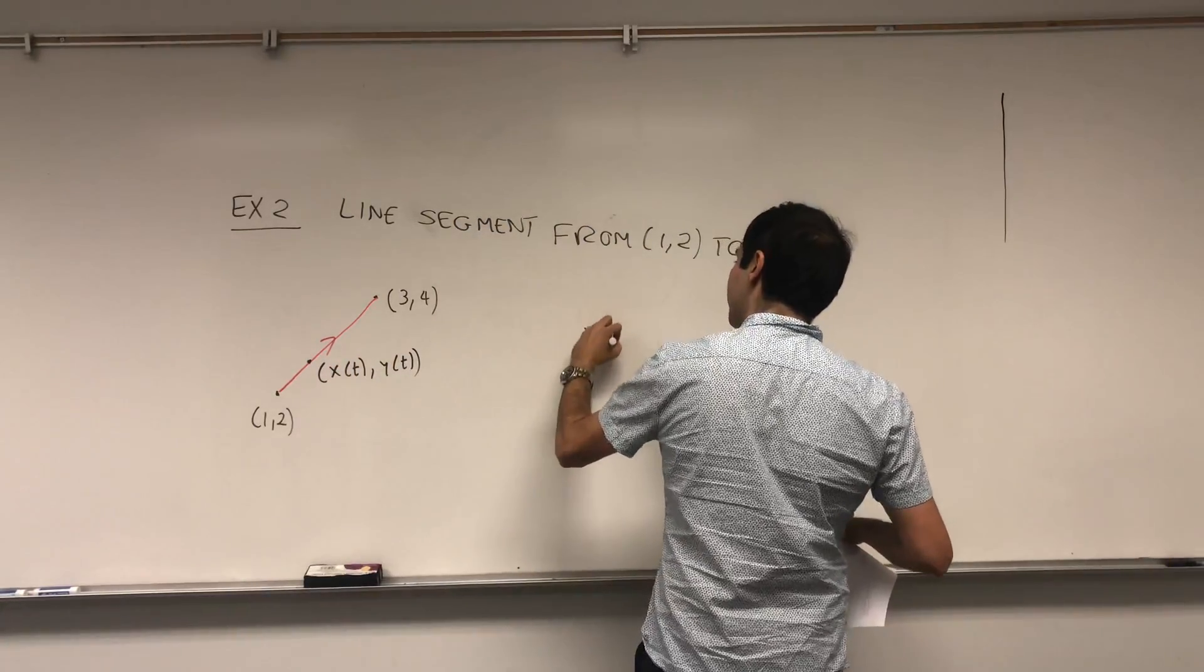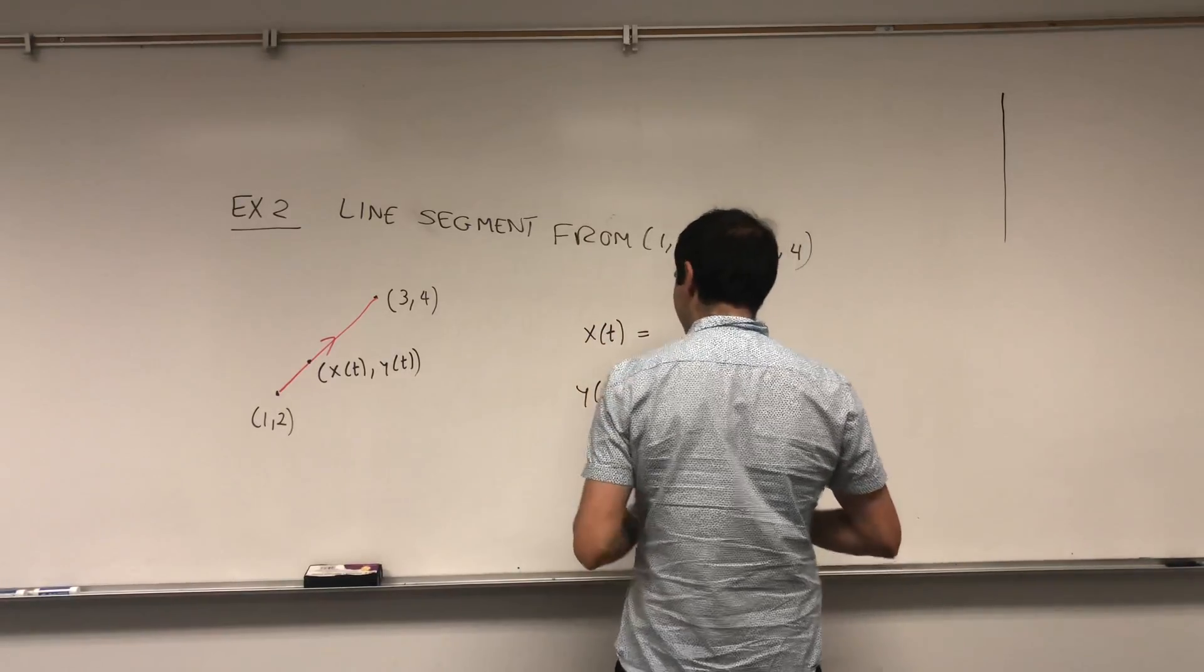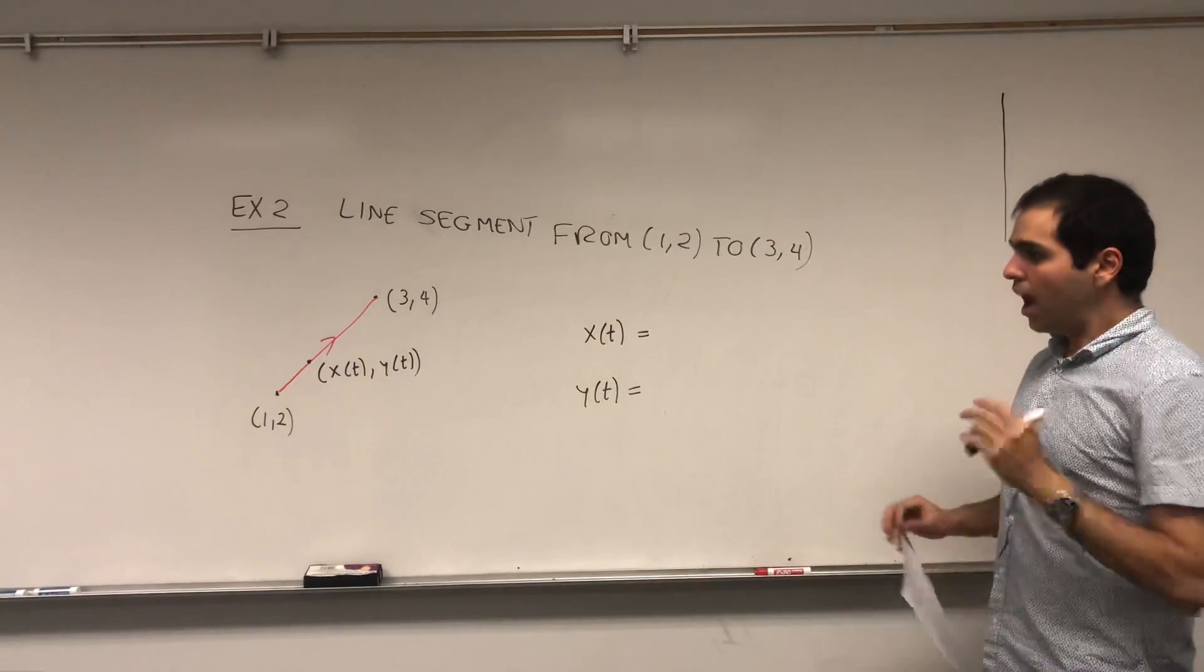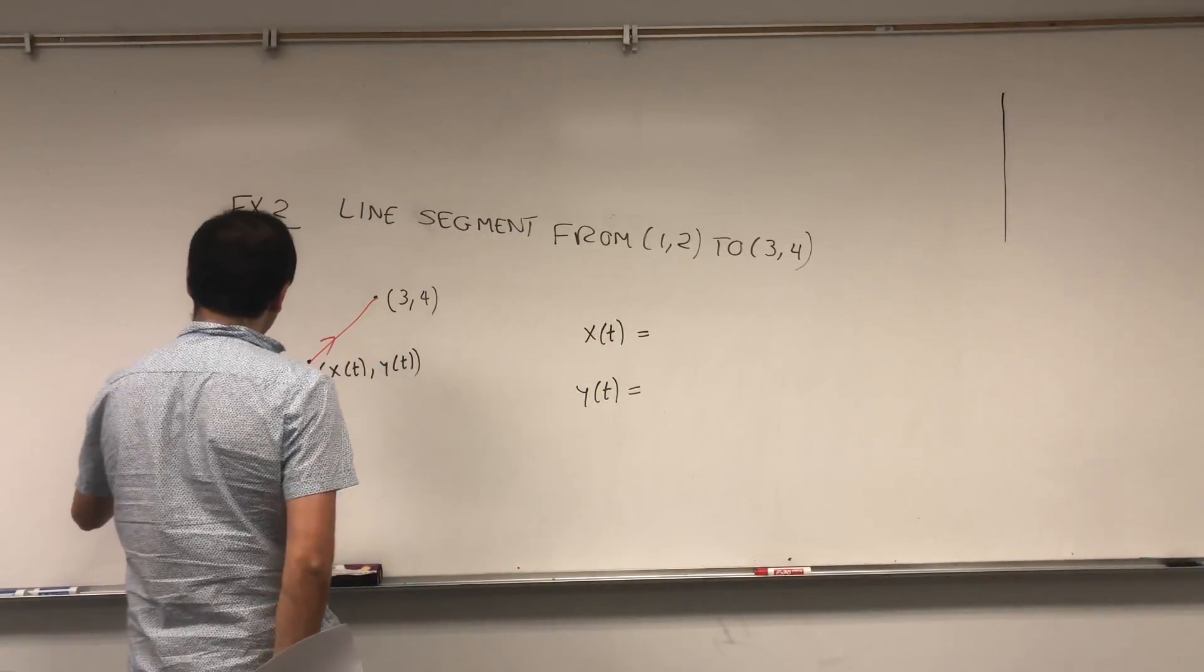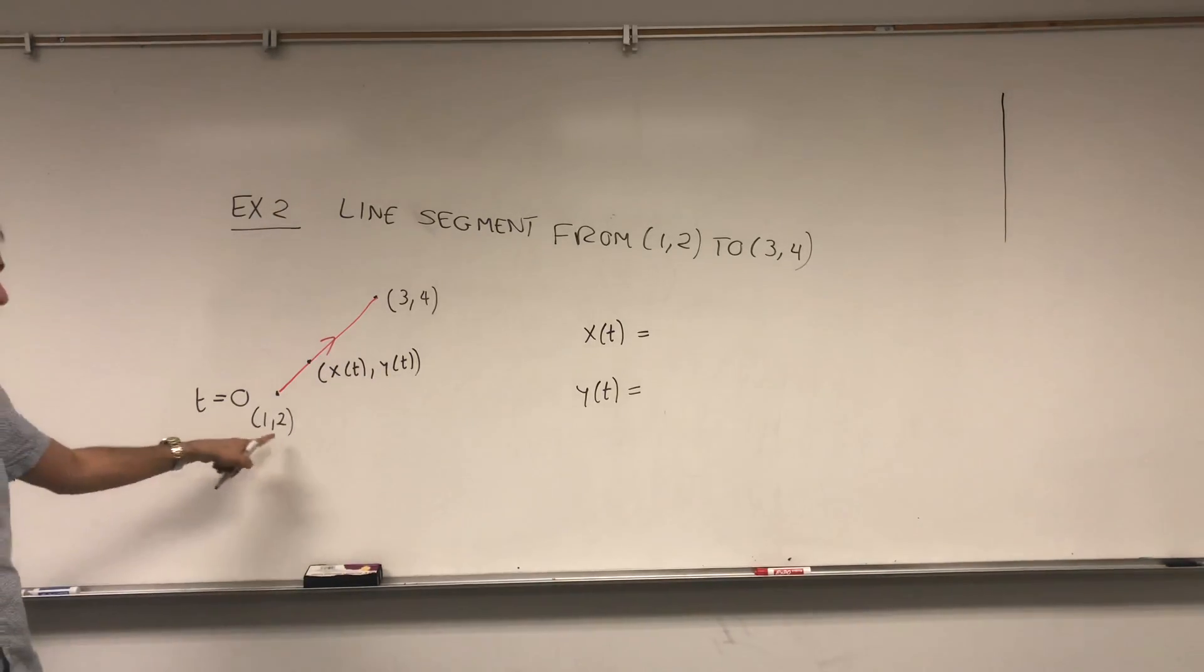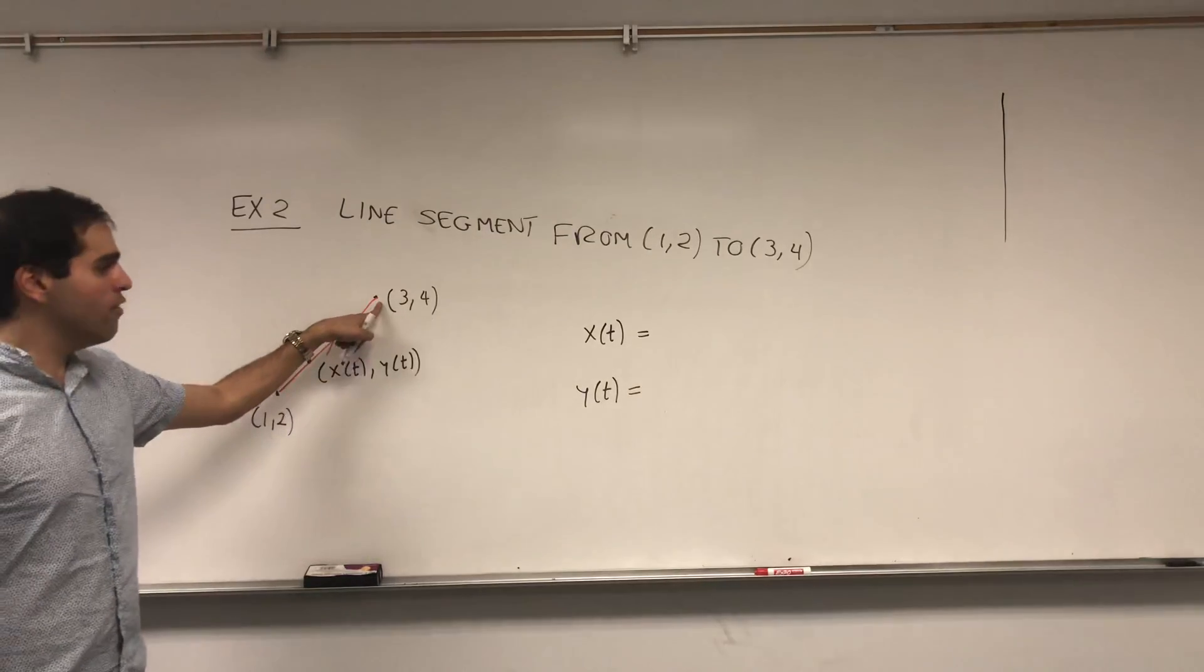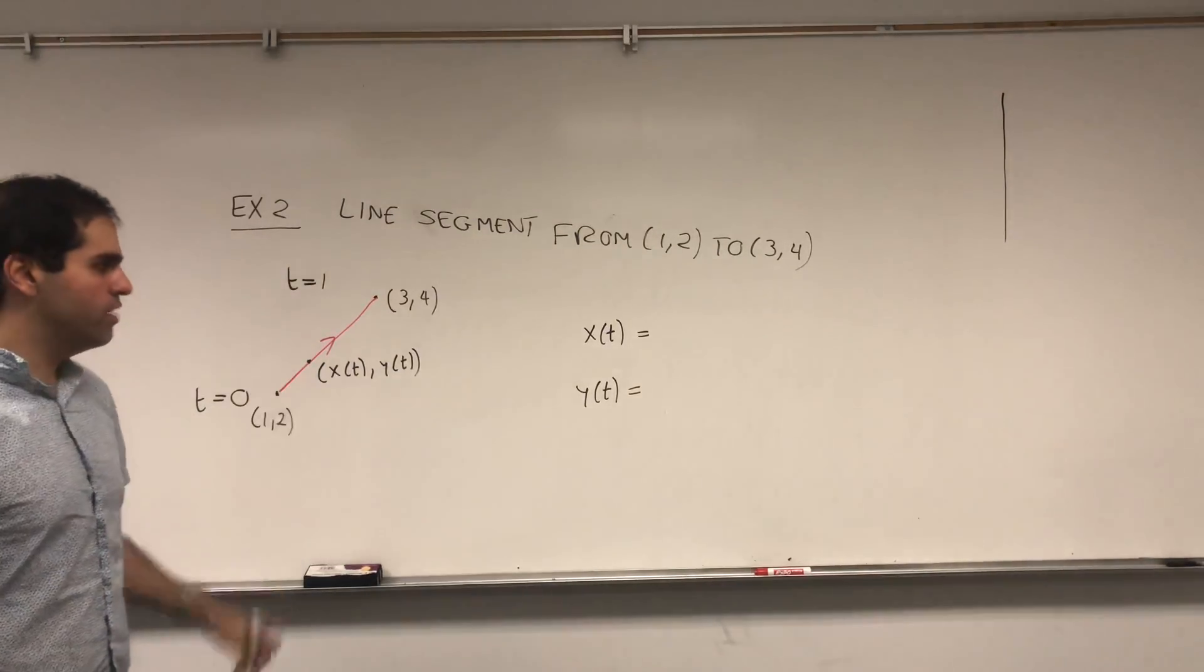And again, we want to write this in terms of x and t and y of t. So x of t will be something, and then y of t will be something else. How do we do this? Again, initially, what you want, you want to start, again, with t equals zero. Initially, you want to be at the point 1, 2, and finally, so at the end, you want to be at the point 3, 4.